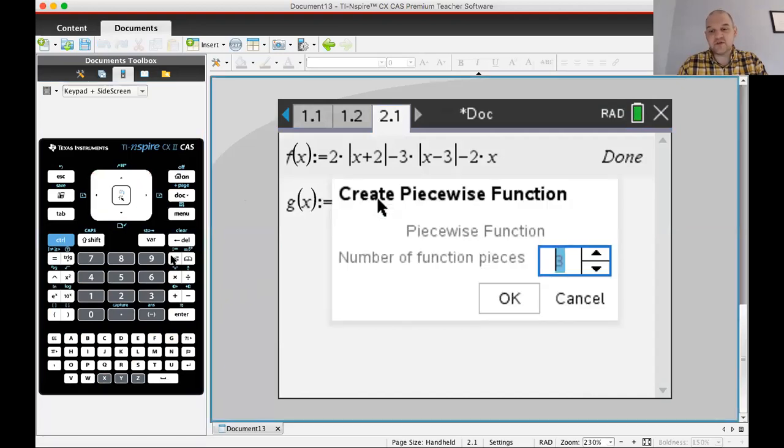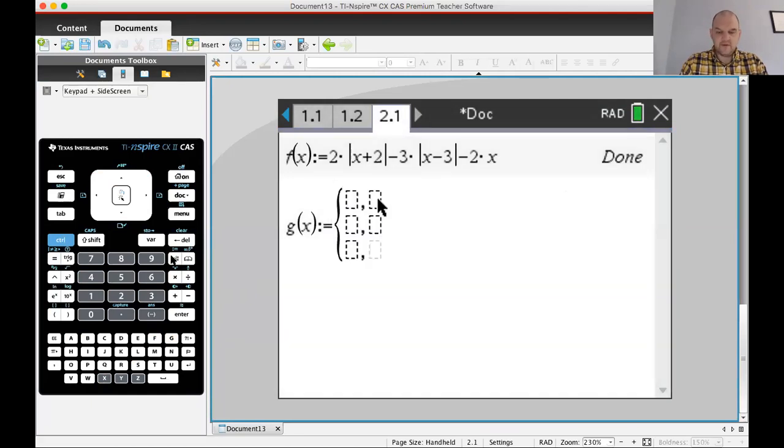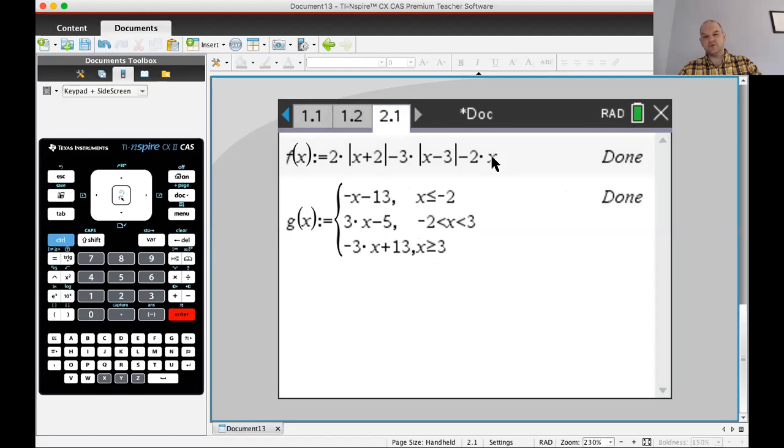I'm going to define g of x to be the piecewise version that I wrote. We'll see if it's right. If it's not right, I'll probably scrap this whole video and do it over again. So negative x minus 13 for x less than or equal to negative 2, 3x minus 5 when x is between negative 2 and 3, and then negative 3x plus 13.